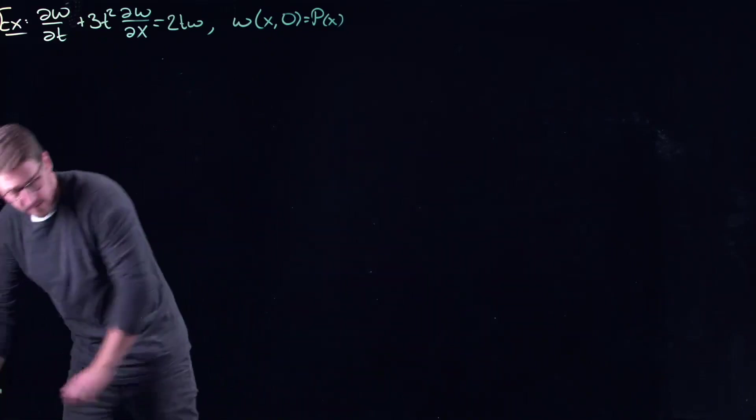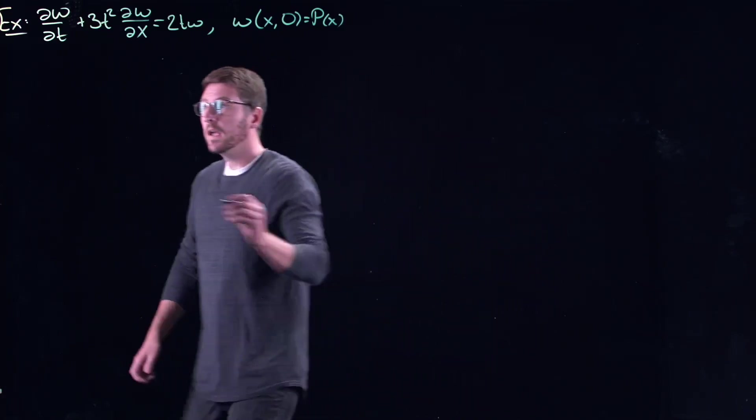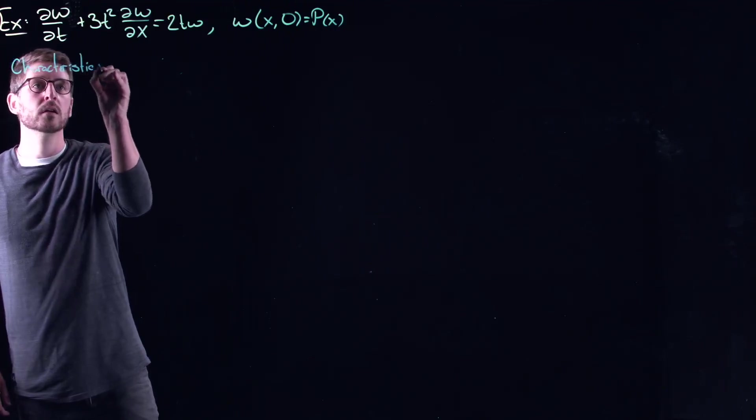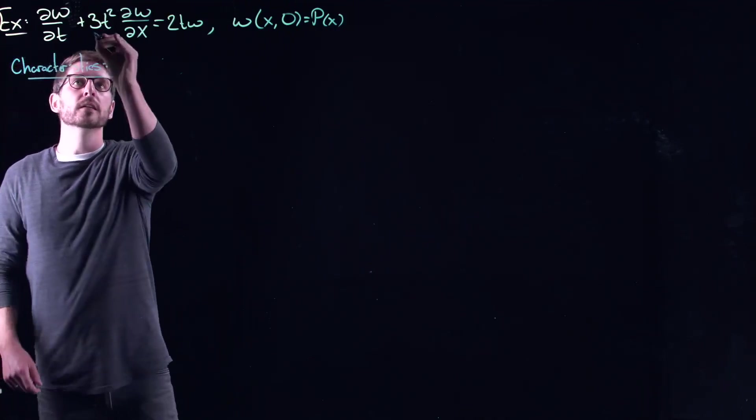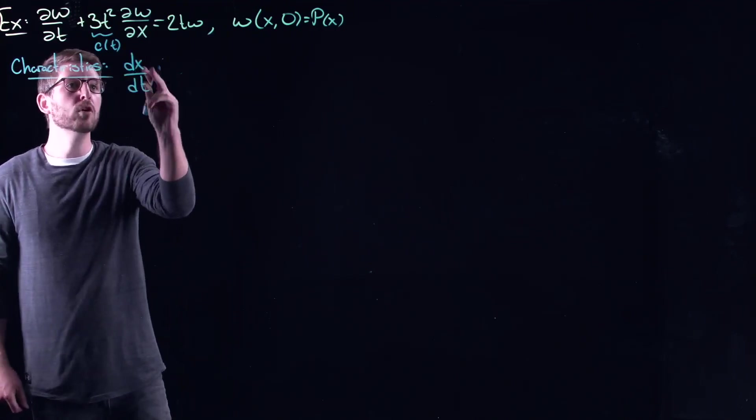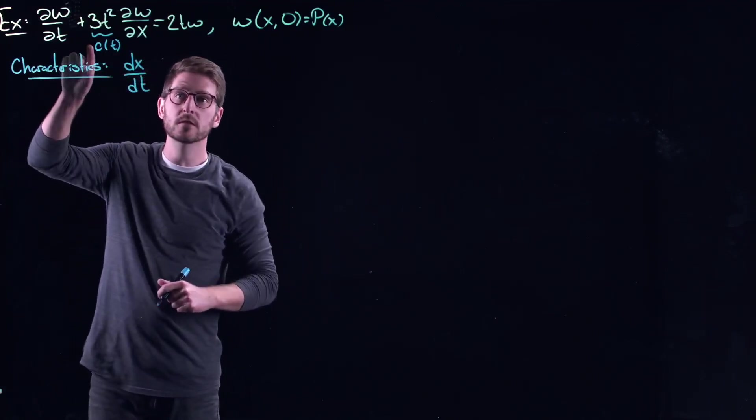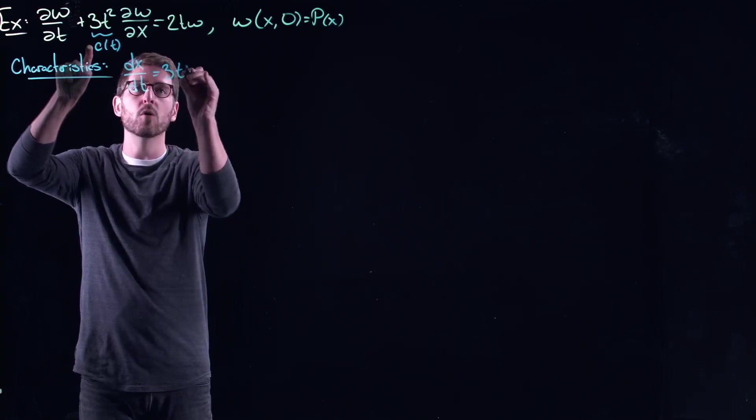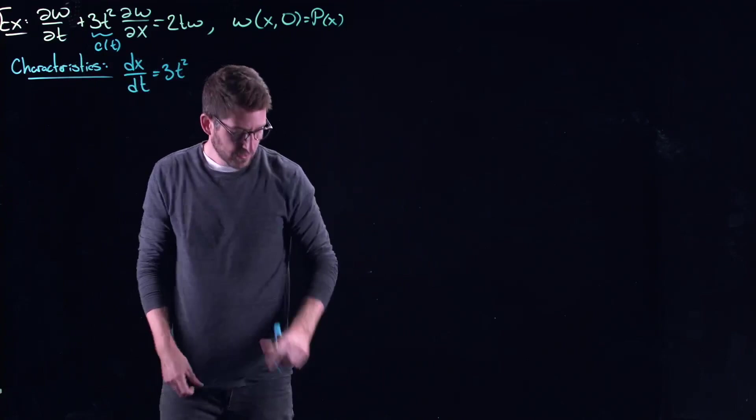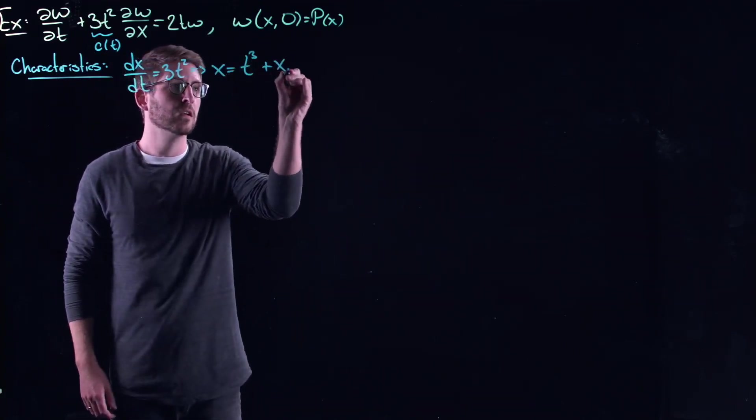All right. So we can basically follow the same steps that we just had previously. And we can define the characteristics in the same way. The characteristics are going to be, this is our c of t term. You want your movement in x to be equal to the speed of the movement in x to be equal to this speed right here. So you get this little ordinary differential equation. In this case, it's just a simple integration problem. So this tells us that the characteristics are defined like this.